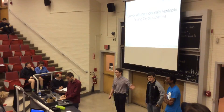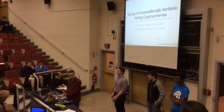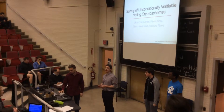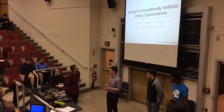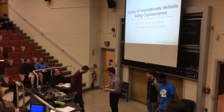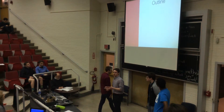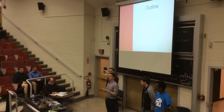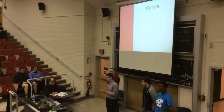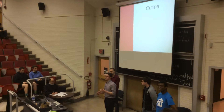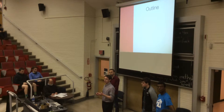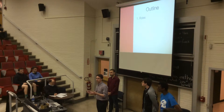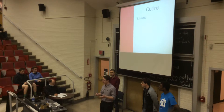This is Zach, Devin, and Kent. We'll be talking to you about our final project, which is a survey of unconditionally verifiable voting crypto schemes. We saw in lecture how we can apply some of the cryptographic techniques learned throughout this course, in particular to the problem of voting, and some of the problem-setting complexities that arise when we do so. To start out, we'll recap the roles and permissions involved in voting schemes.